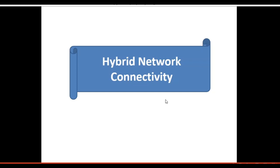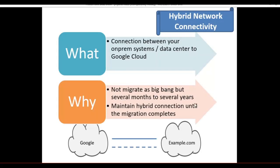Hello everyone! The topic of our video today is hybrid network connectivity. Let us start with what hybrid network connectivity is and why we need it. Hybrid network connectivity is simply the connection between your on-premises system or data center to Google Cloud. When you migrate your system to the cloud, you cannot do it in a big bang but gradually, step by step, especially for large enterprise companies where the IT system is really huge and complex.